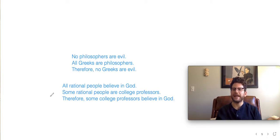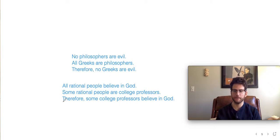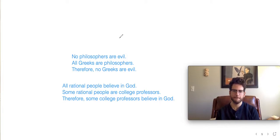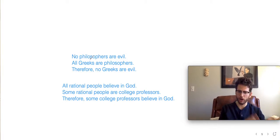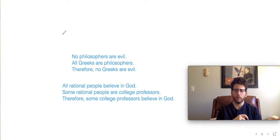Let's look at one more — a slightly more complex deductive argument. Unlike the other two where we only had 'all,' now we've got 'all' but also 'none,' adding some complexity. We still know it's deductive because we're starting with general statements and trying to arrive at something specific about Greeks. Let's draw it out.